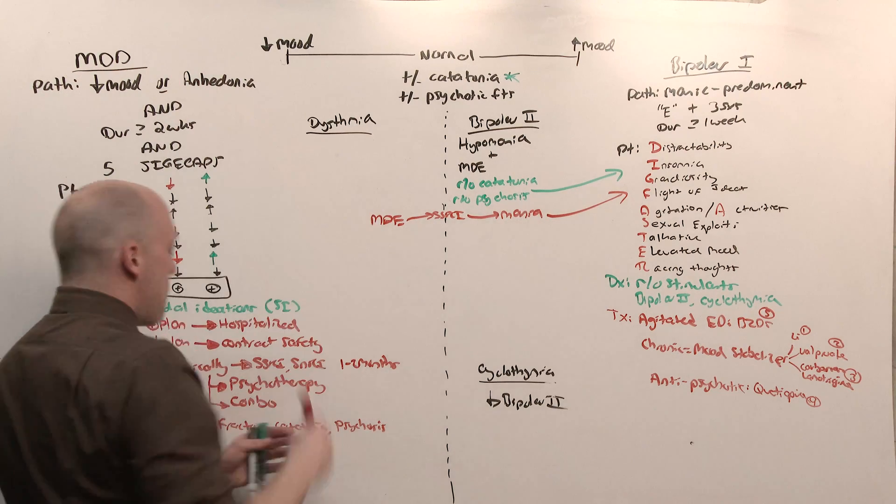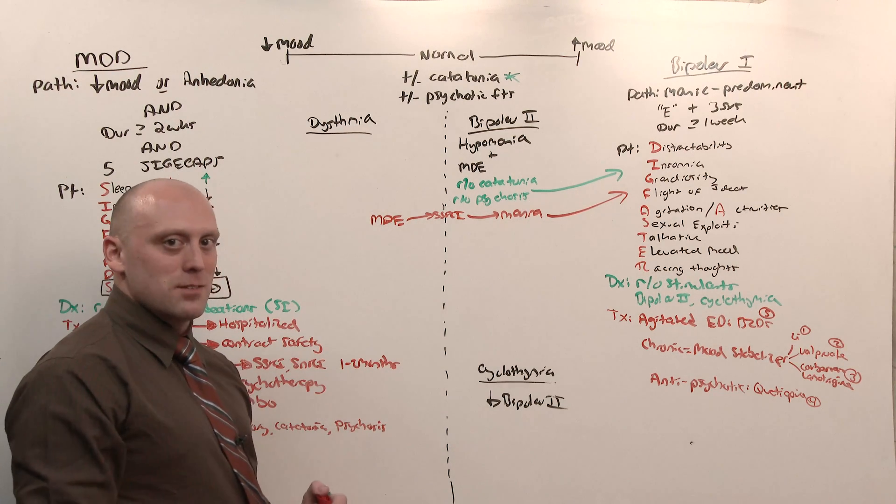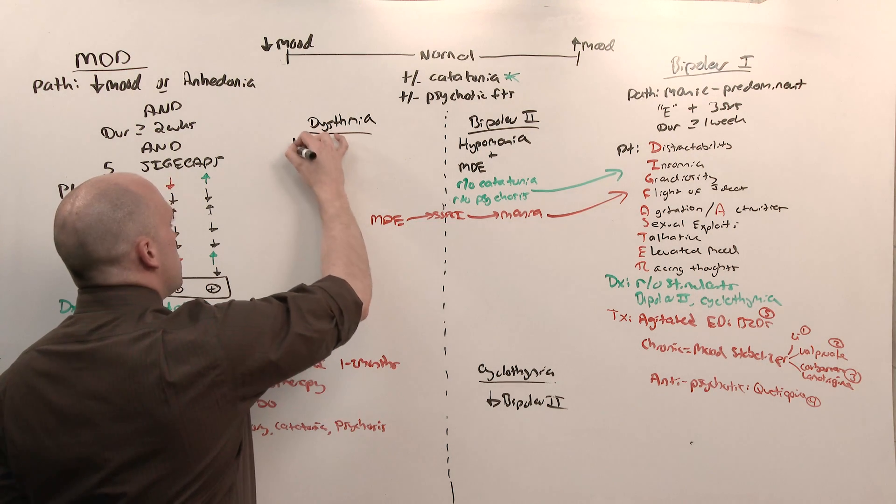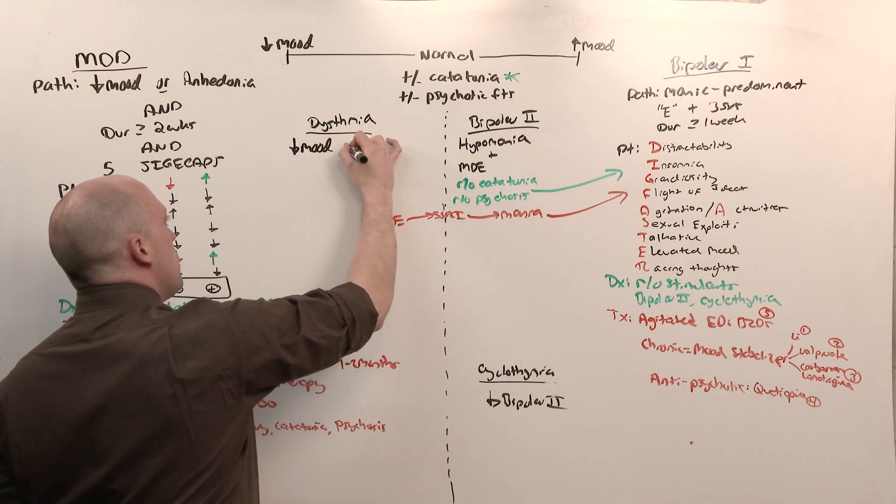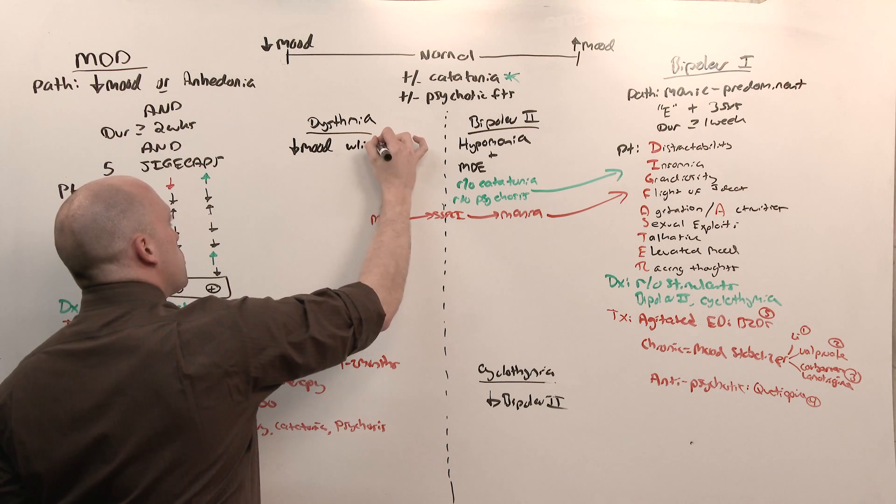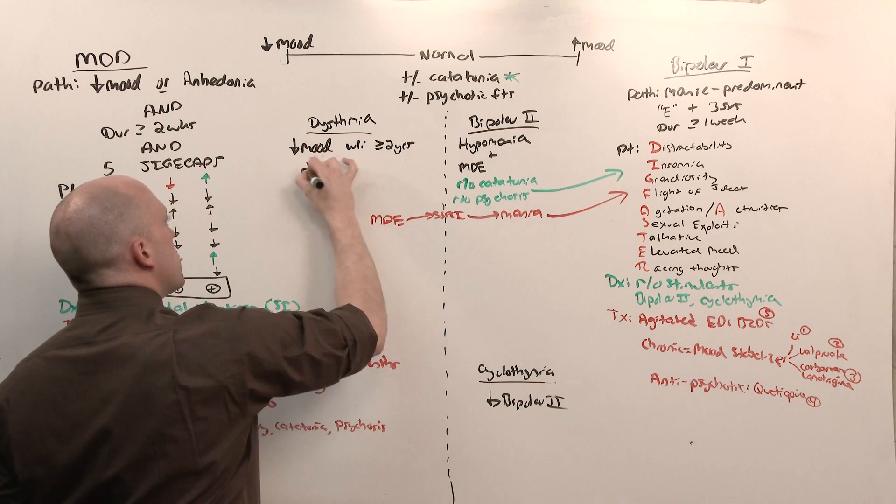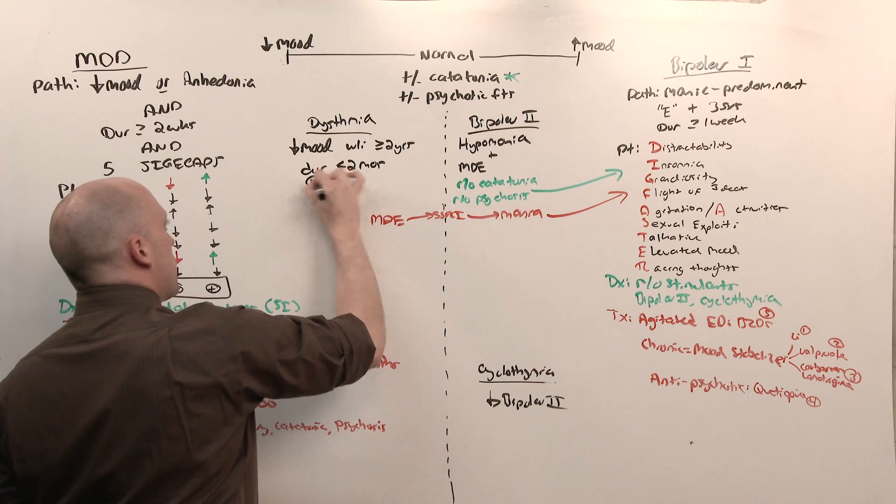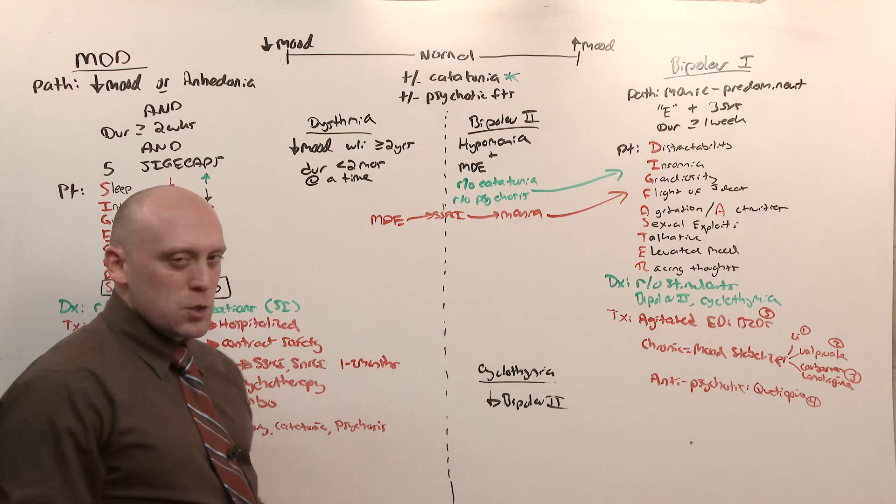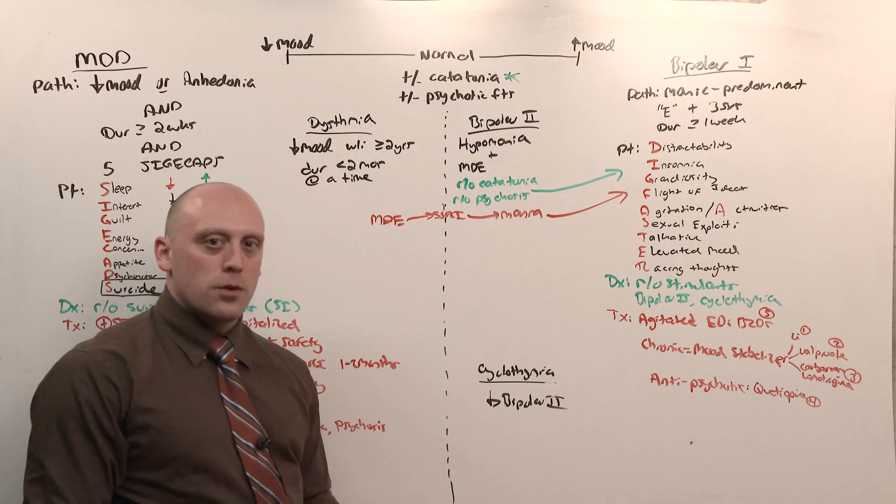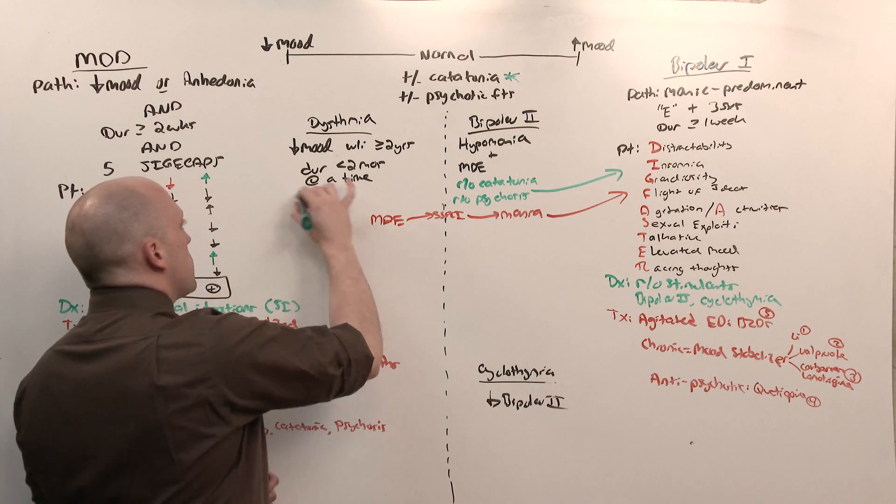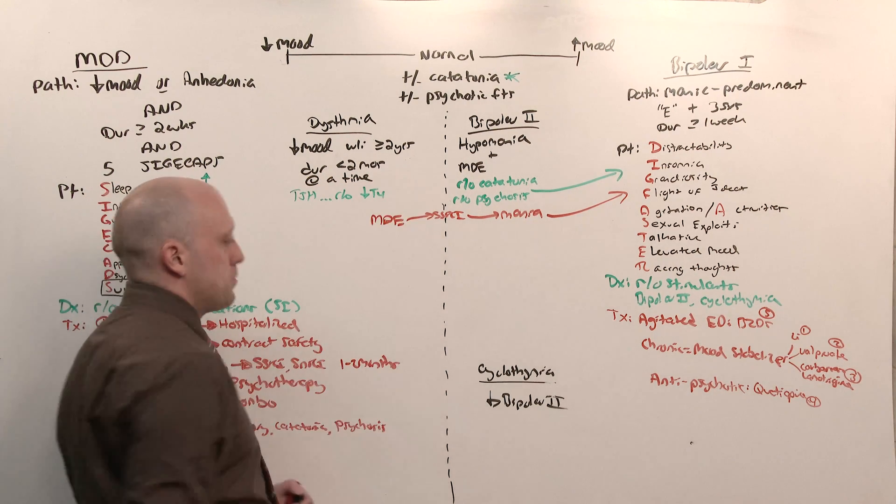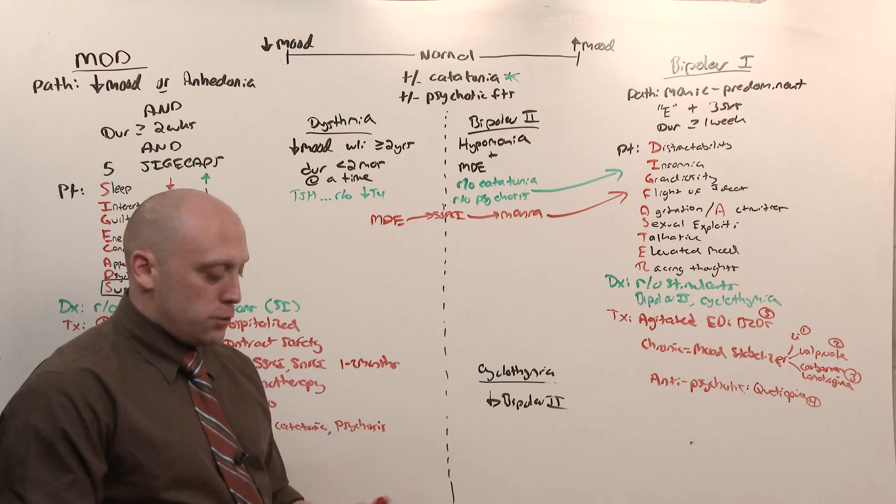Dysthymia is sort of mini chronic indolent major depressive disorder. Dysthymia is defined by a depressed mood within a two-year period or longer, but the duration was never more than two months at a time. You're going to see someone who's a little slow, a little down. They look hypothyroid. So you get a TSH to rule out hypothyroid. These are treated with SSRIs.